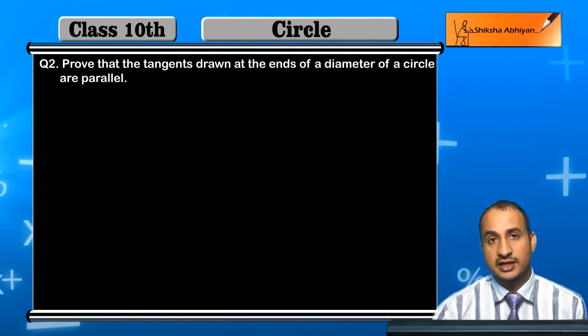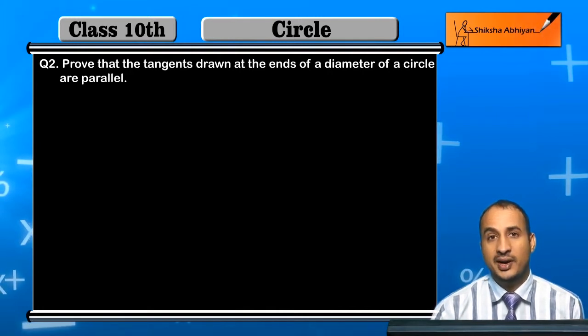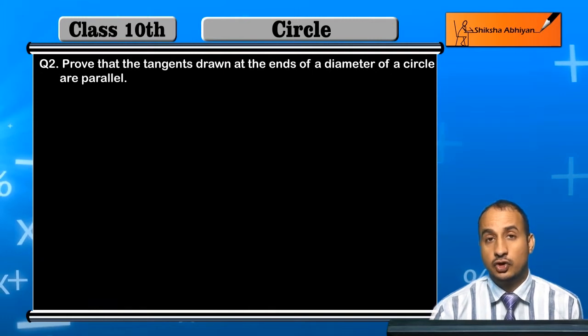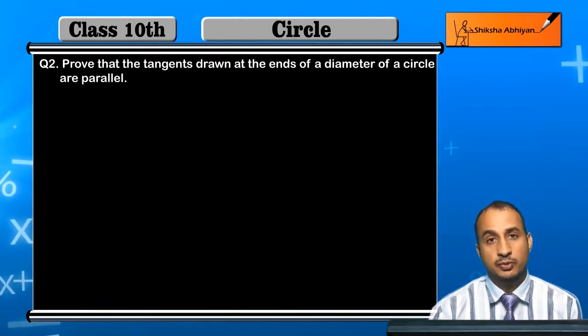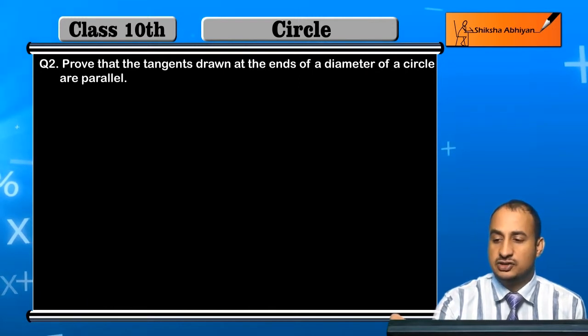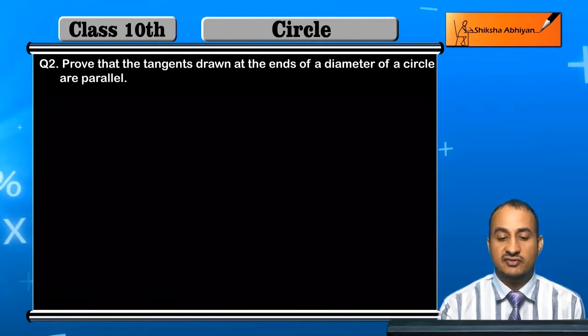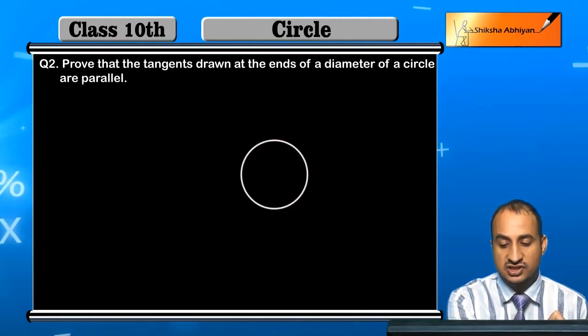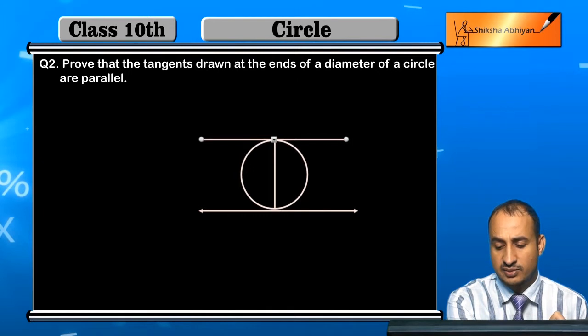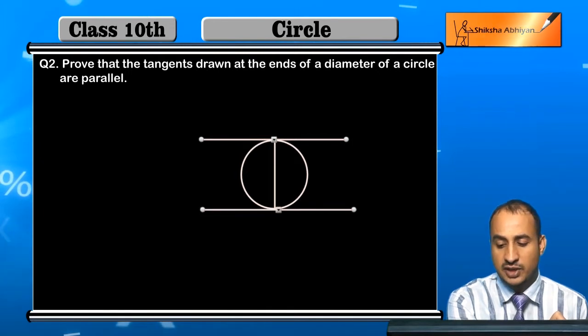If you want to draw the tangents to the end of the circle, the tangents will be proved to be parallel. First of all, I will make a figure. So this is a circle, this is a diameter, and here I have two tangents.